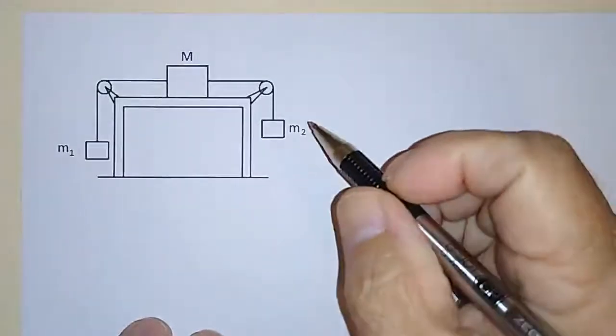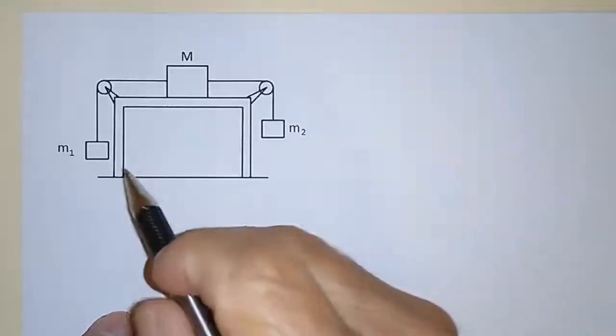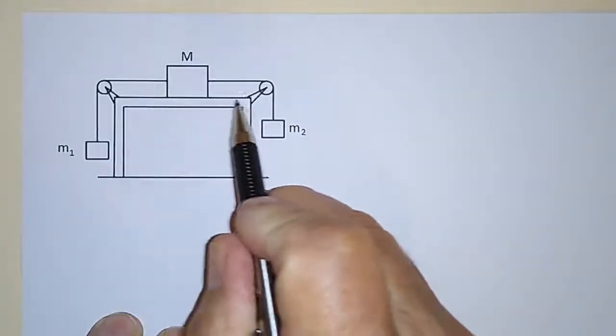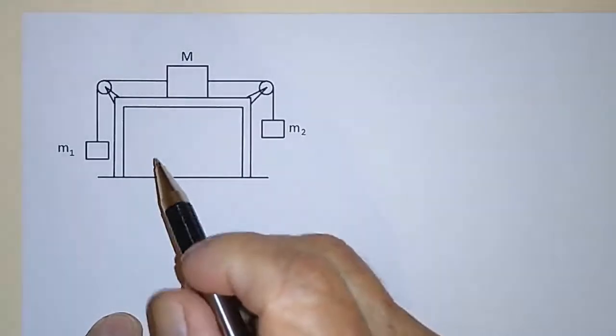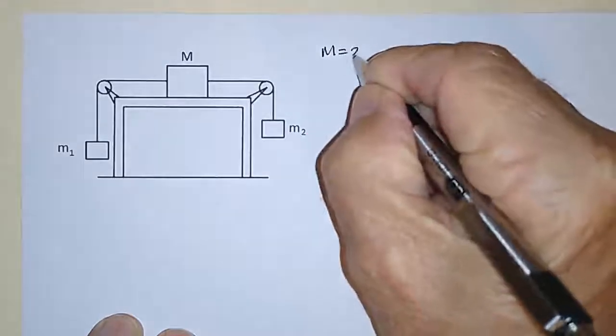Okay, here's another little statics problem for you. Let's say that we have three masses. One of them is sitting on a frictionless table, a frictionless surface here.